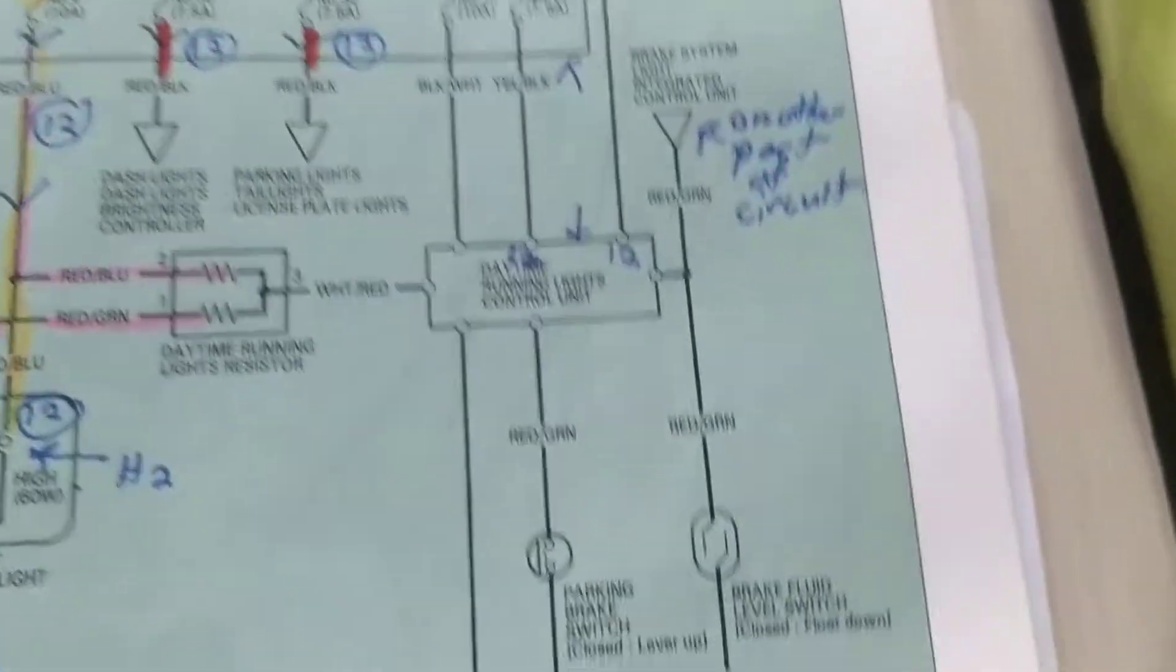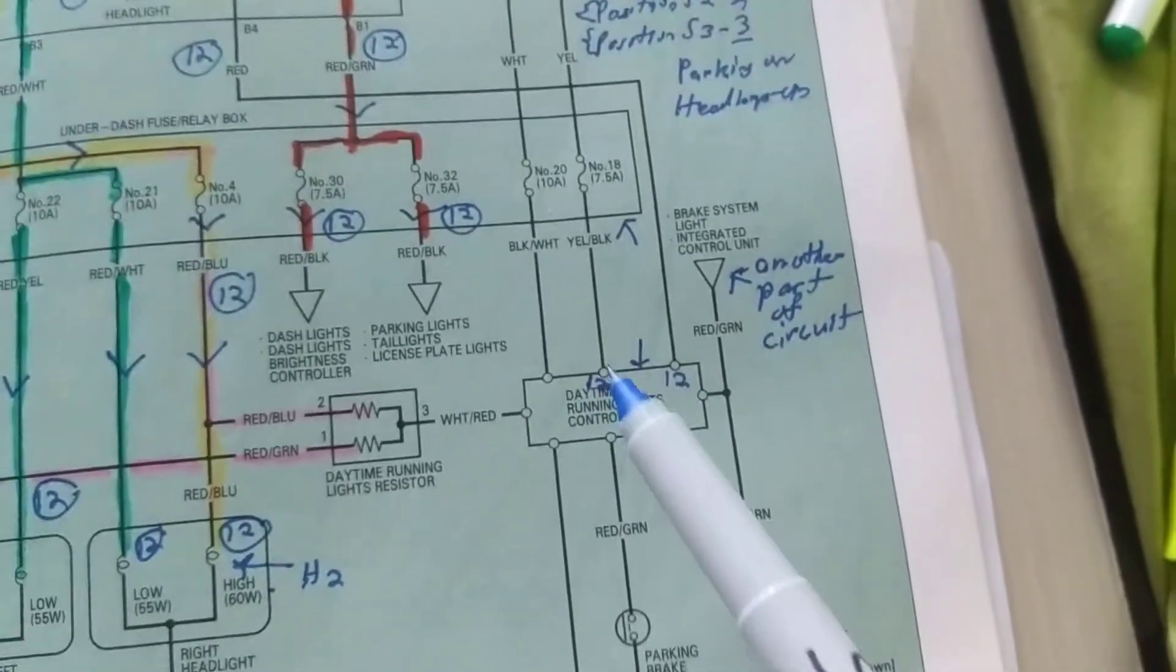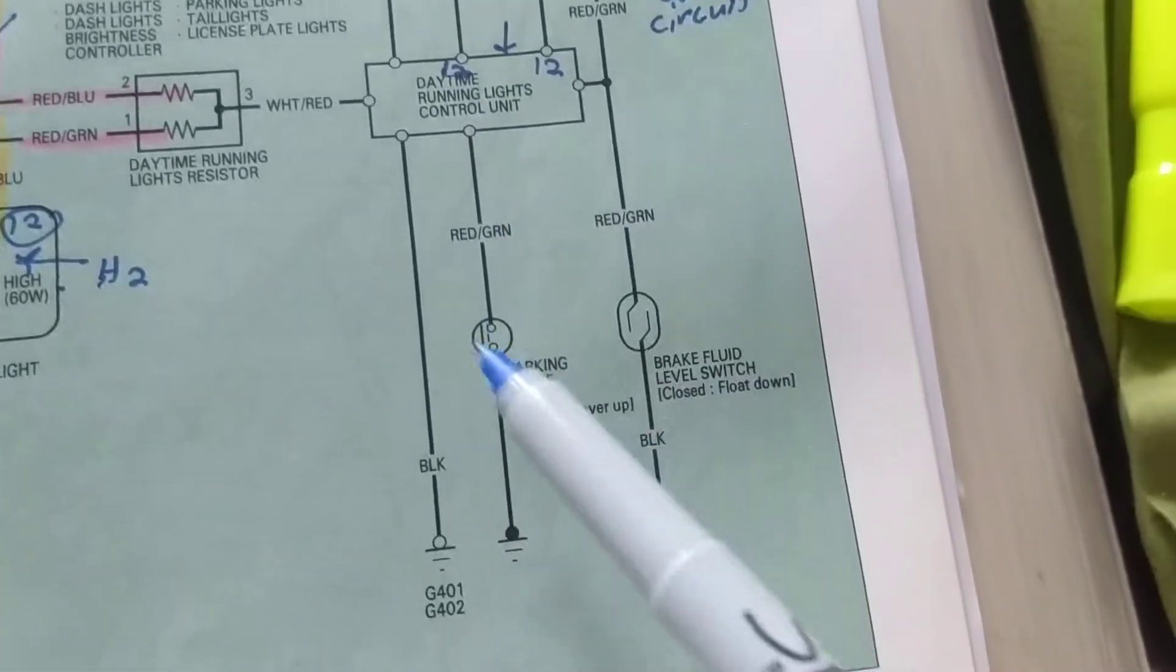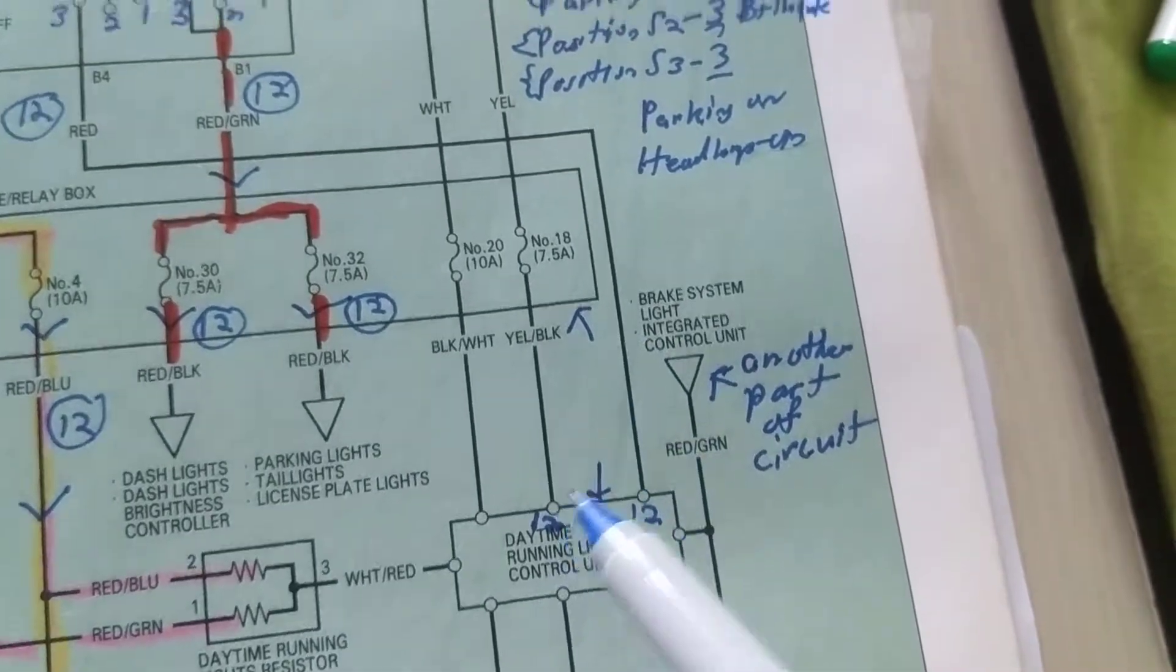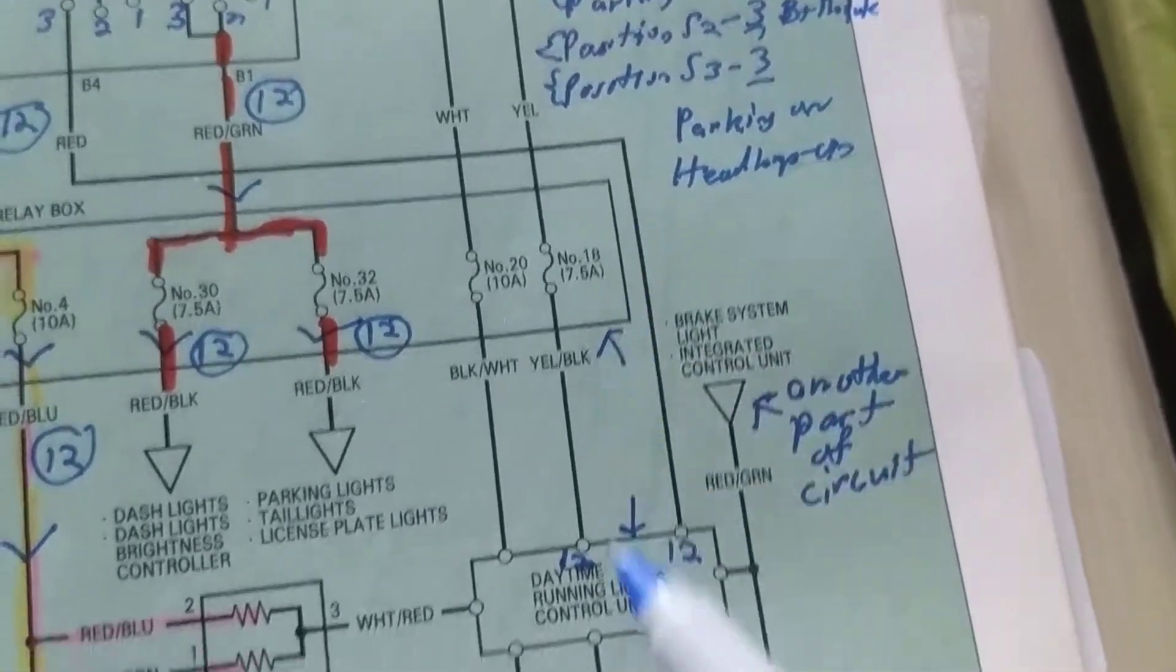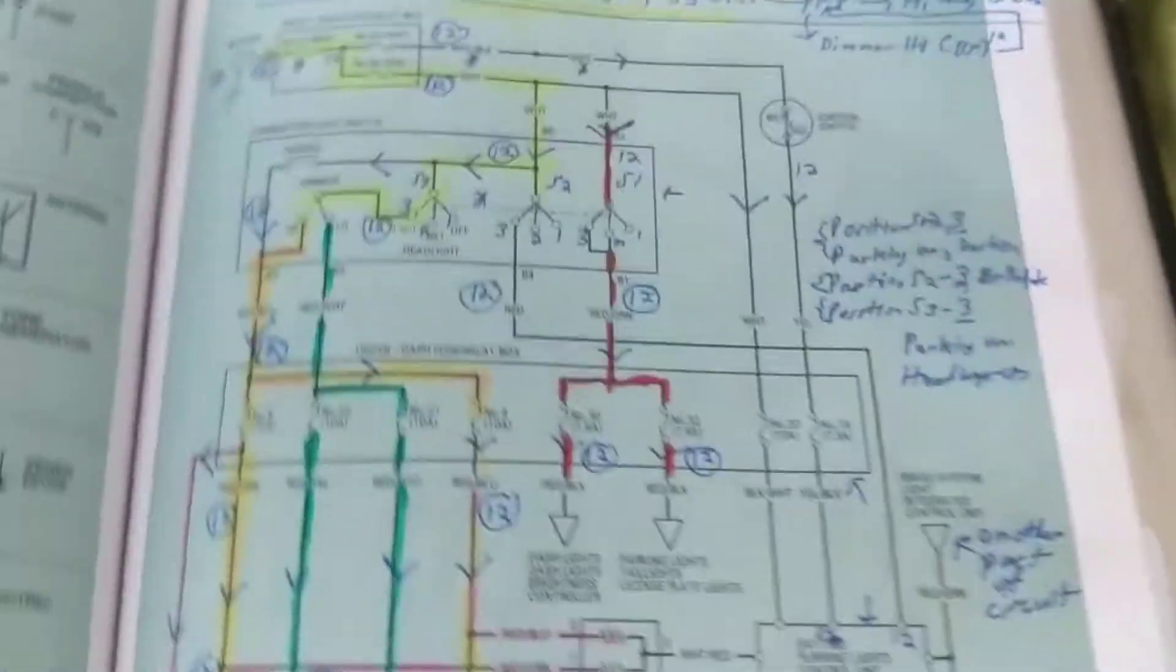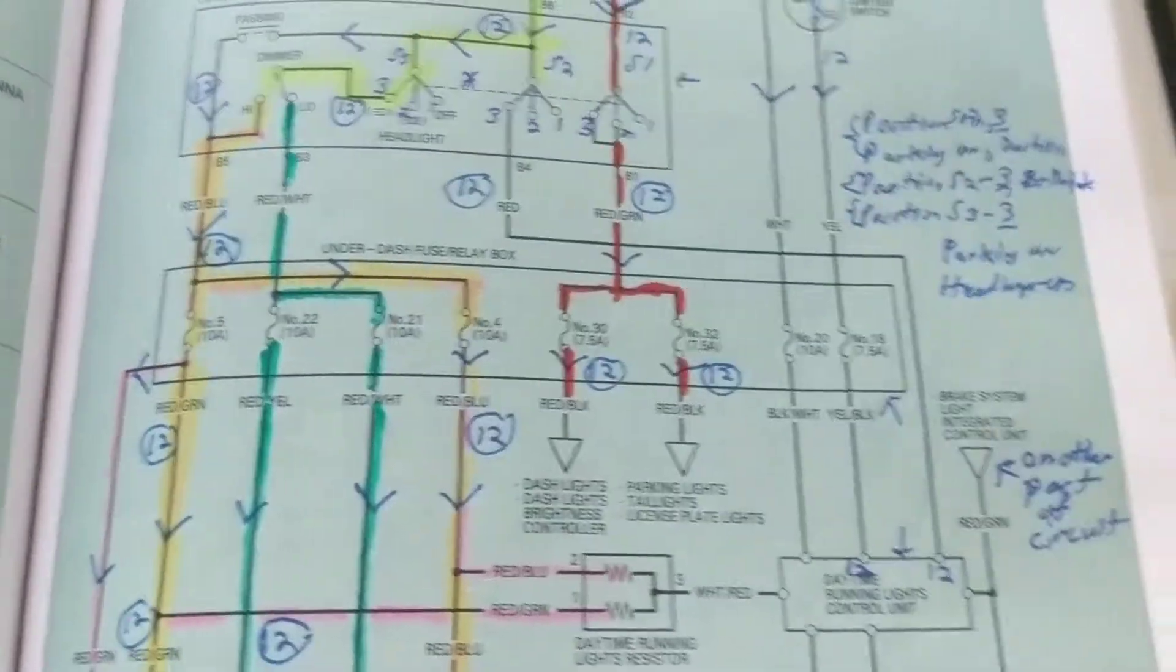If I think I have a problem with a daytime running light module, I'm going to focus on this module. See what this is connected to, and go over here and see where my B+, my 12 volts is coming. Depends what you're looking for and what you're troubleshooting. That's the starting point, the part of origin.